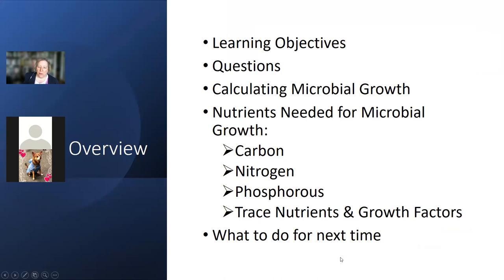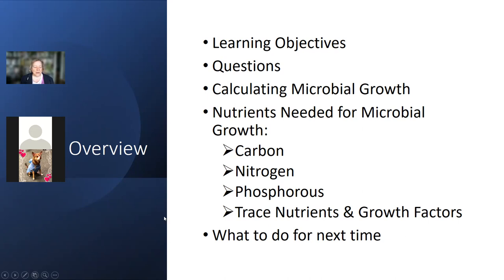Here's the order we're going to be talking about things. We're going to go over the learning objective, then we will do a bit of math - some practice in calculating microbial growth. Then we're going to talk about nutrient needs: carbon, nitrogen, phosphorus, trace nutrients and growth factors, and then we'll talk about what to do for next time.